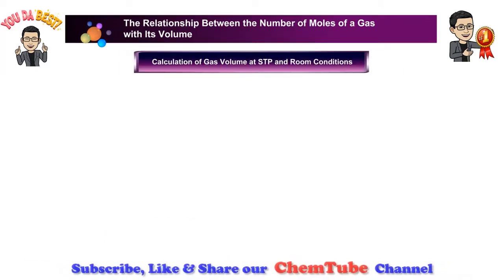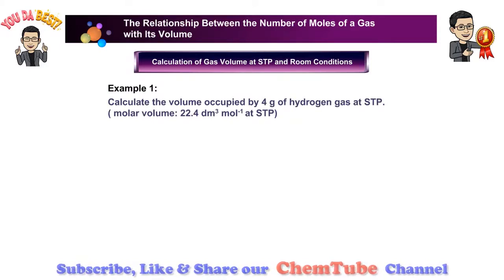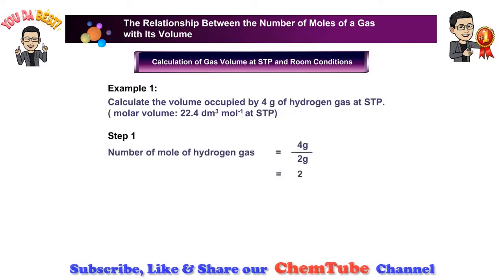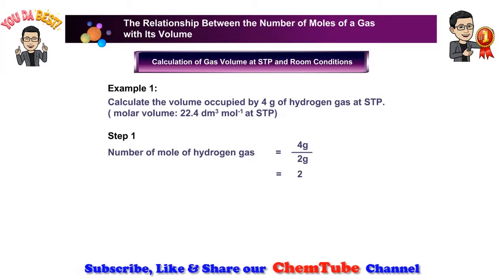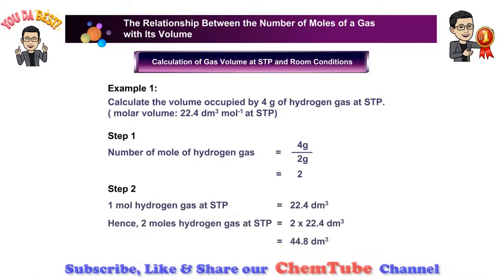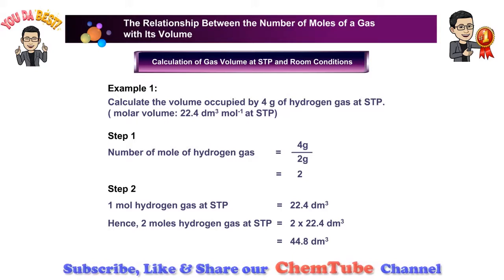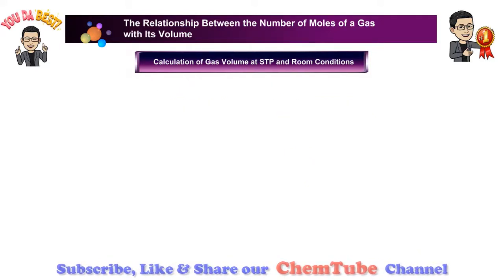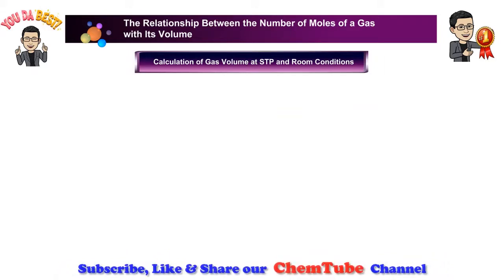Calculation of gas volume at STP and room conditions. If the mass of a gas is given, we must first calculate the number of moles for the gas. The number of moles of hydrogen gas is equal to its mass divided by its relative molecular mass. One mole of any gas at STP occupies 22.4 cubic decimetres. Hence, 2 moles of hydrogen gas at STP occupies 2 times 22.4 cubic decimetres, which equals 44.8 cubic decimetres.